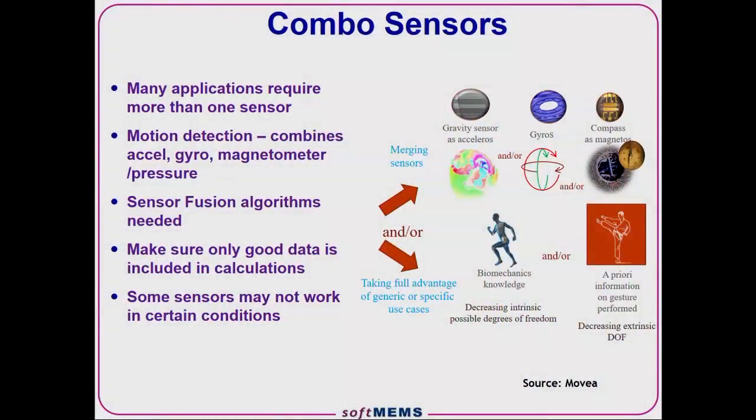Many of our applications require more than one sensor. For motion detection, we combine data from accelerometers, gyros, possibly a magnetometer or a pressure sensor, so we need sensor fusion algorithms. We need to make sure the data from sensors is correctly represented and that we know when sensors are really giving the correct output. For example, magnetometers don't work near batteries or big pieces of iron, and your accelerometer may not work in certain placements. You've got to ensure data going into these algorithms is appropriate and that correct data conditioning has been applied.